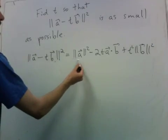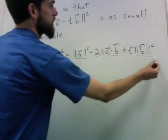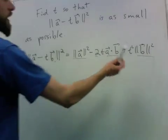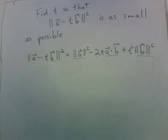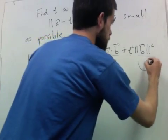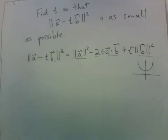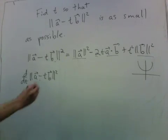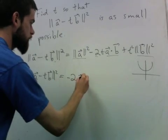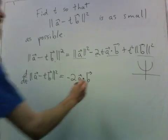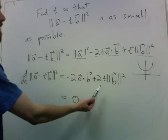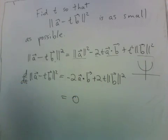Think about what we have here — these are all numbers, so we have a quadratic in t. The coefficient of t squared is positive as long as b is nonzero, so we're just finding the minimum of an upward-facing parabola. Taking the derivative and setting it equal to zero gives: negative 2 times a dot b plus 2t times the length of b squared equals zero. Therefore t equals a dot b divided by the length of b squared.